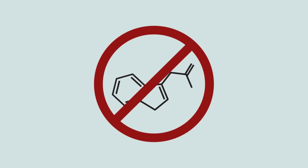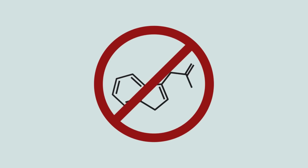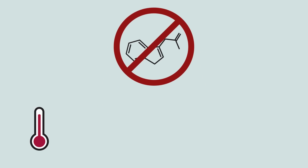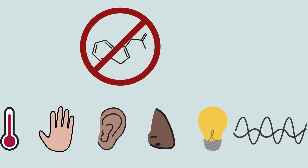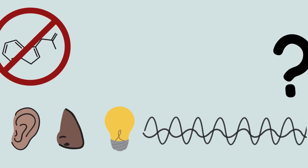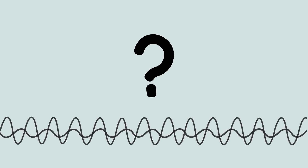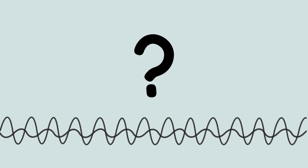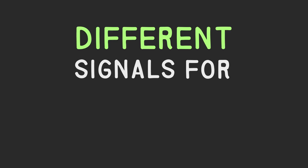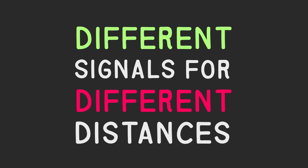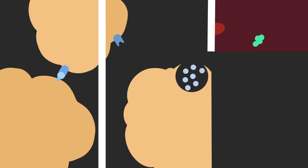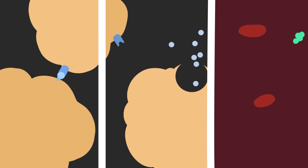There are non-chemical methods of communication, using sensory stimuli and electromagnetic radiation, but not very much is known about how they work. Different types of signaling are used for different distances. Some messages are sent through direct contact, while some travel short or long distances outside of the cell.